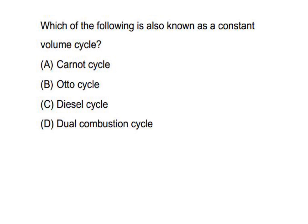Which of the following is also known as a constant volume cycle? The constant volume cycle is the Otto cycle. The constant pressure cycle is the Diesel cycle. The dual cycle involves both constant volume heat addition and constant pressure heat addition. I will draw the PV diagram for the Otto cycle.